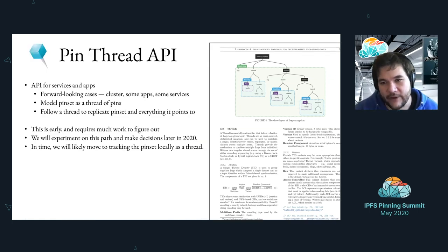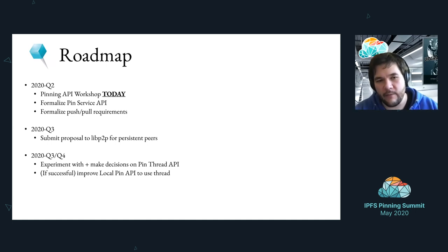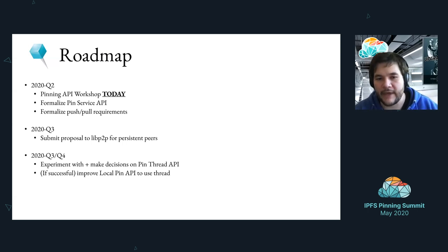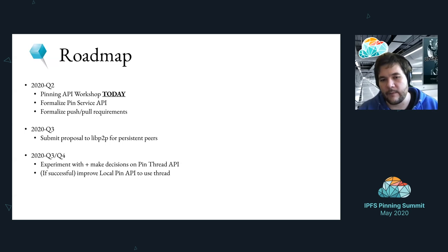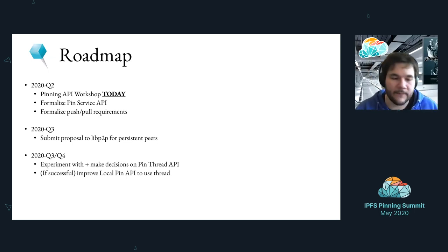If you haven't read about textile threads in depth, definitely go do it — it's going to change how you write a lot of applications. For the roadmap: we'll have the workshop later today, then I'll formalize these changes and proposals and submit them, and hopefully do the simple pin service API soon because that's what people need most. Later in 2020 we can make decisions on the pin thread API. We could move faster depending on people's desire to implement. The IPFS team has all hands full, but the pin service API is a critical piece that could probably be done soon, and everything else will get staged over time.